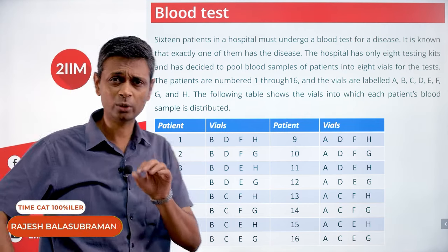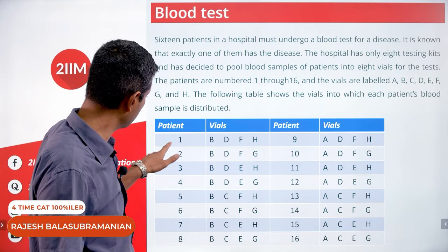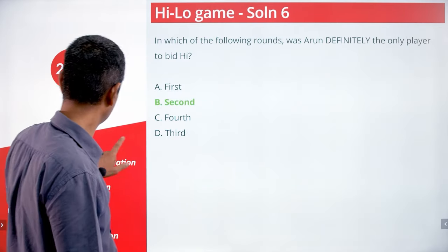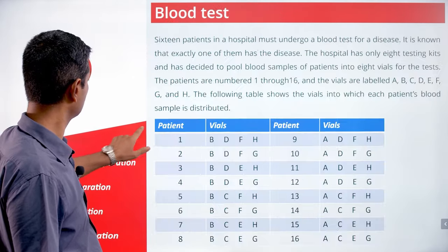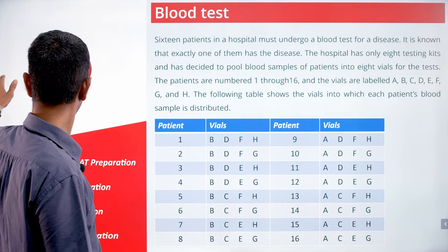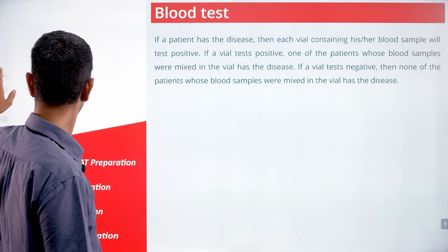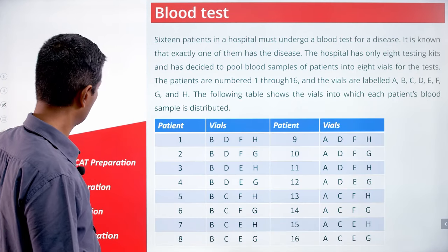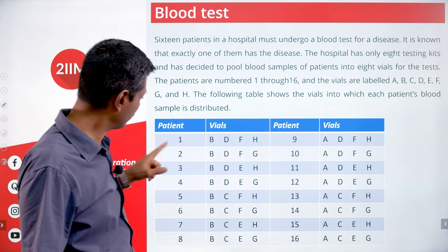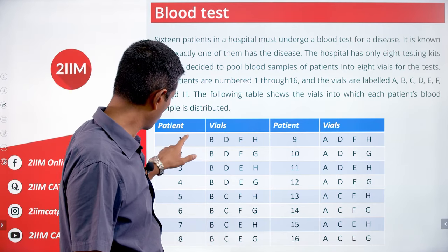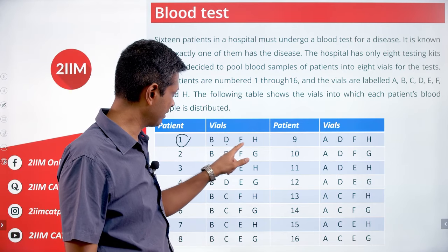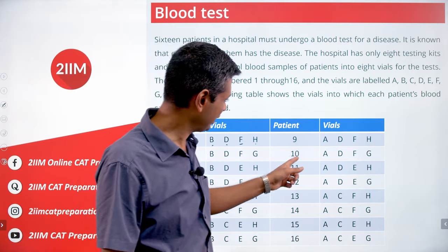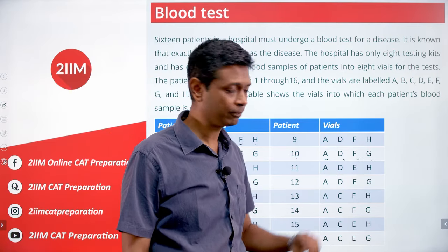It took me a while to understand this. So we take blood from patient number 1 and put it into vials B, D, F, and H. Patient number 10's blood goes into A, D, F, and G.